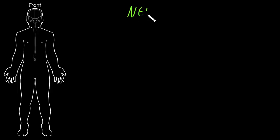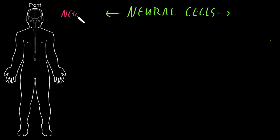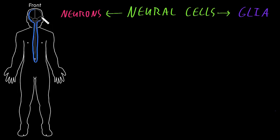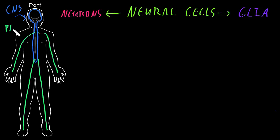In this video, I'm going to talk about the different types of neural cells, the cells of the nervous system. We divide neural cells into two big categories: the first called neurons, and the second called glia, or glial cells, or neuroglia. There are many structural and functional types of both neurons and glia, meaning they have different shapes and perform different jobs. Some neural cells are found only in the CNS (central nervous system), mainly the brain and spinal cord, and some are found only in the PNS (peripheral nervous system), mainly the nerves that go throughout the tissues of the body. Neurons are found in both the CNS and PNS. Most types of glial cells are found only in the CNS, and a few types are found only in the PNS.